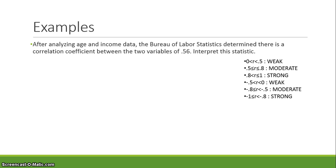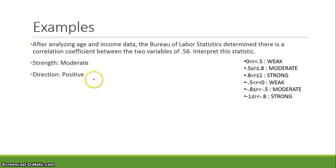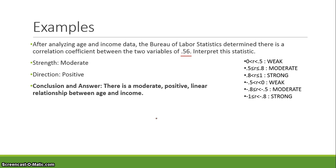Here's a classic AP Statistics free response example. After analyzing age and income data, the Bureau of Labor Statistics determined a correlation coefficient of 0.56. Interpret this statistic. You need to state the strength, direction, and that it's linear. Since 0.56 falls between 0.5 and 0.8, the strength is moderate. Since 0.56 is greater than 0, the direction is positive. The AP Statistics answer: there is a moderate, positive, linear relationship between age and income.